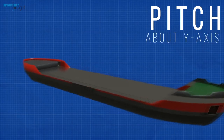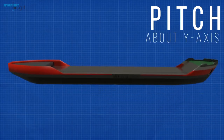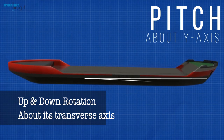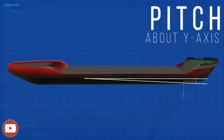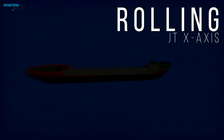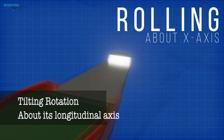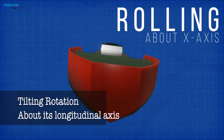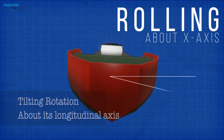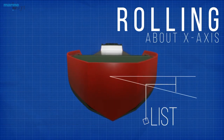Pitch is referred to as the up and down rotation of the vessel about its transverse or y-axis. A deviation from normal on this axis is referred to as trim or out of trim. Rolling is the tilting rotation of the vessel about its longitudinal or x-axis. An offset or deviation from normal on this axis is referred to as list or heel.